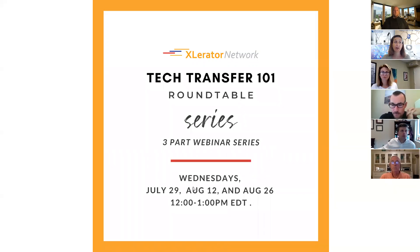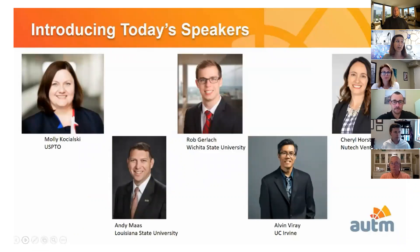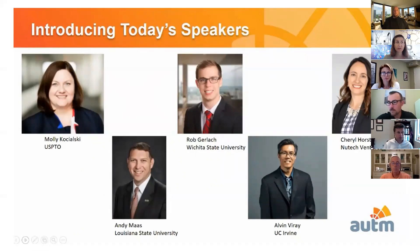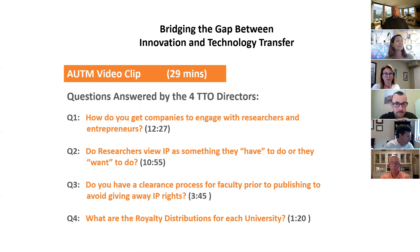Our video today is entitled 'Bridging the Gap Between Innovation and Technology Transfer,' produced by AUTM. In it we hear from four directors of technology transfer offices at Louisiana State University, Wichita State University, University of California Irvine, and New Tech Ventures — a nonprofit affiliate of the University of Nebraska. The host is the Rocky Mountain Regional Director of the US Patent and Trademark Office. The directors address: how do you get companies to engage with researchers and entrepreneurs, do researchers view IP as something they have to do or want to do, and do you have a clearance process for faculty prior to publishing to avoid giving away IP rights.